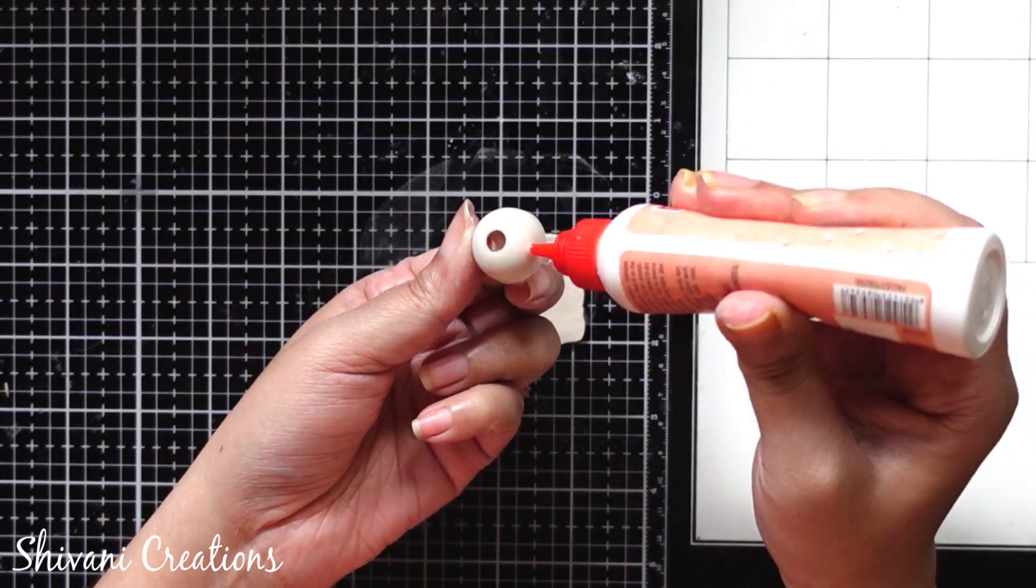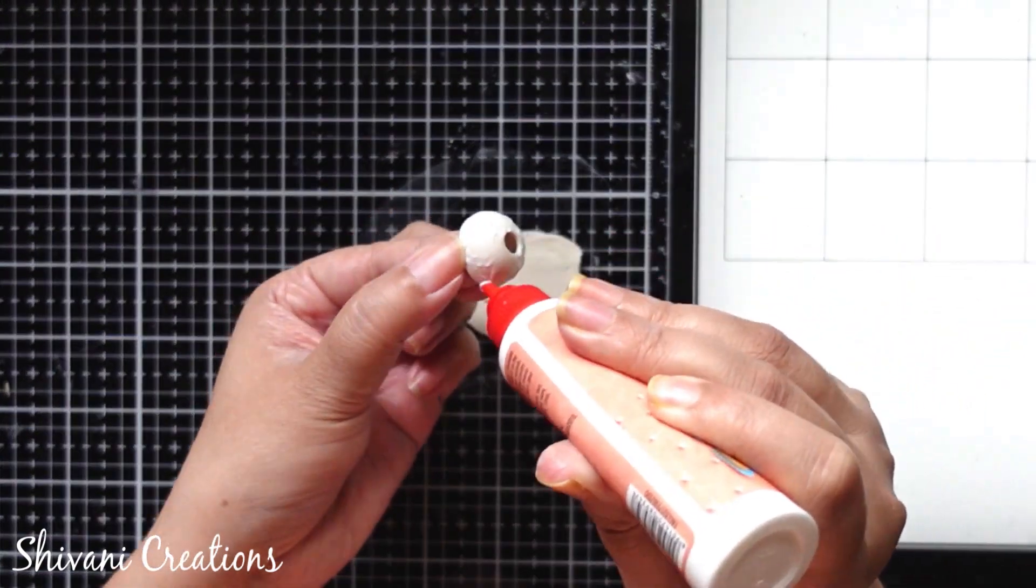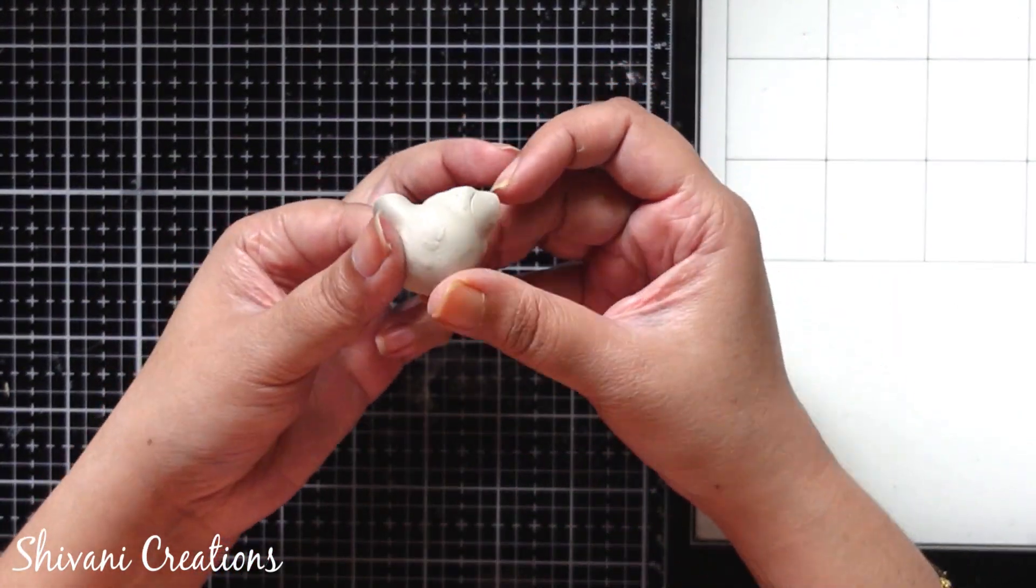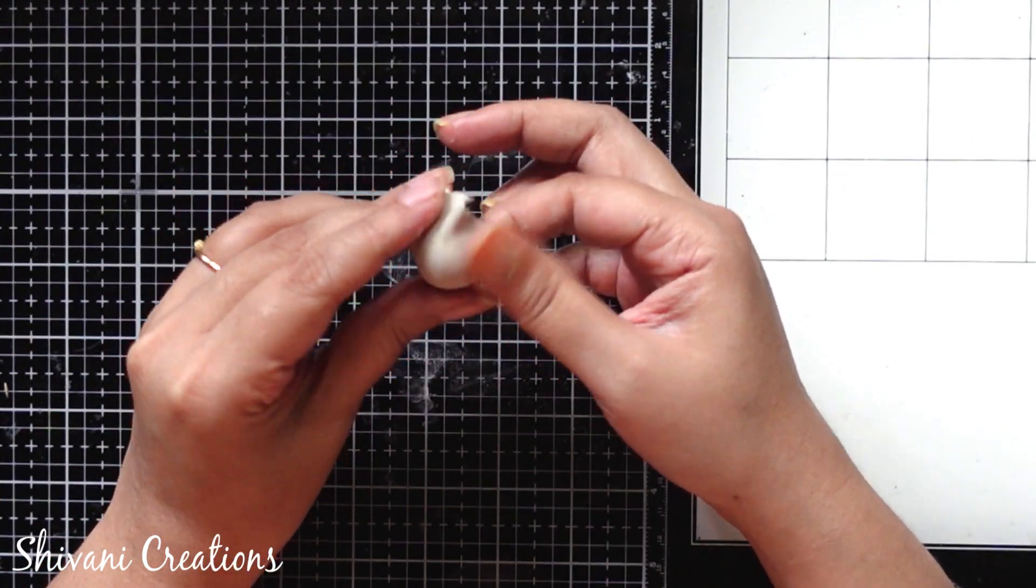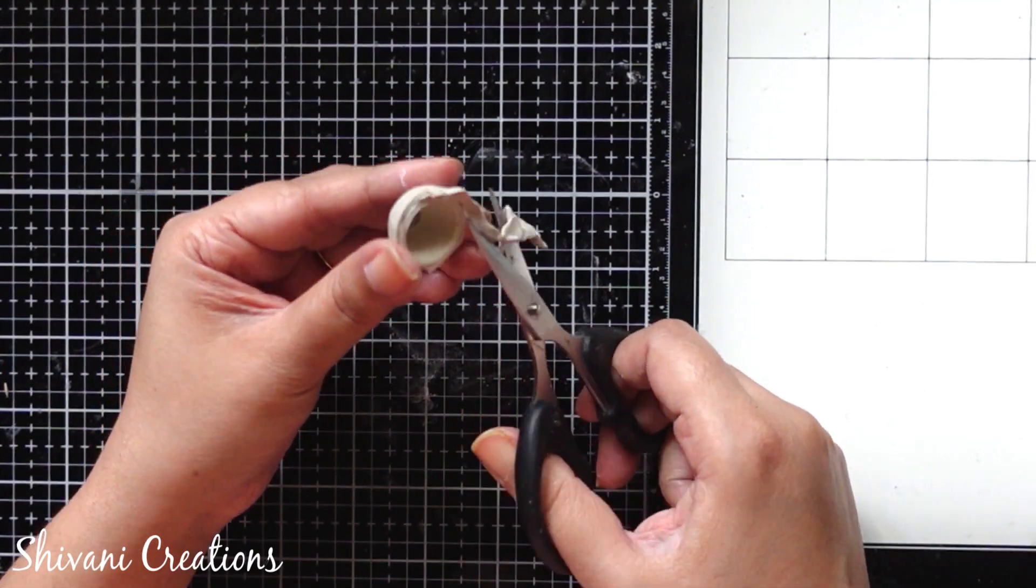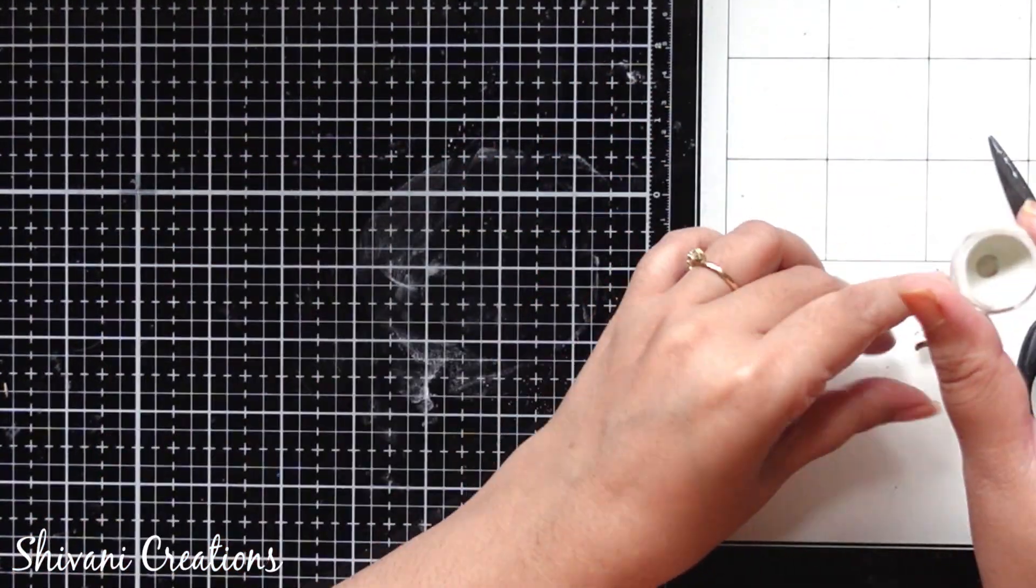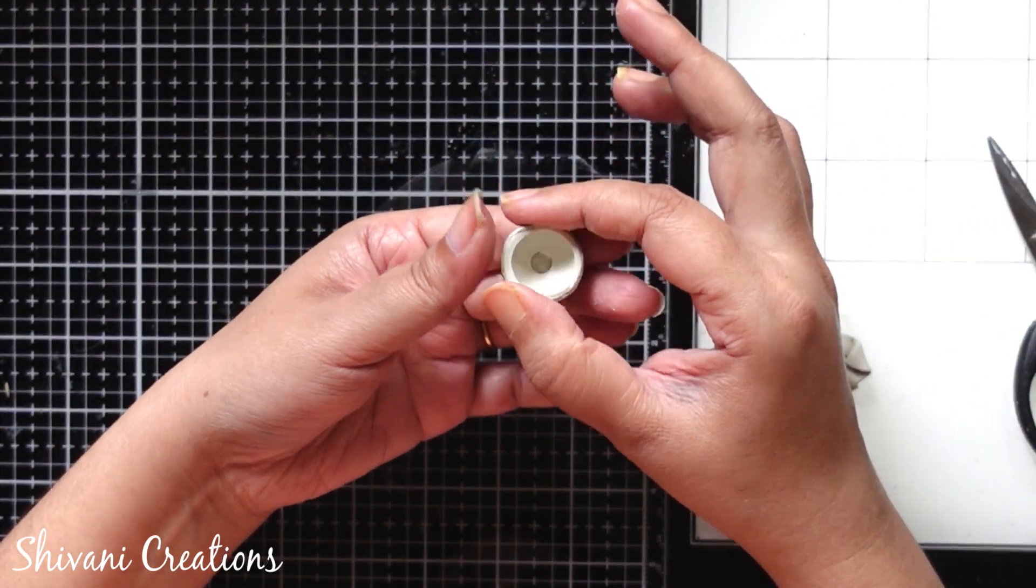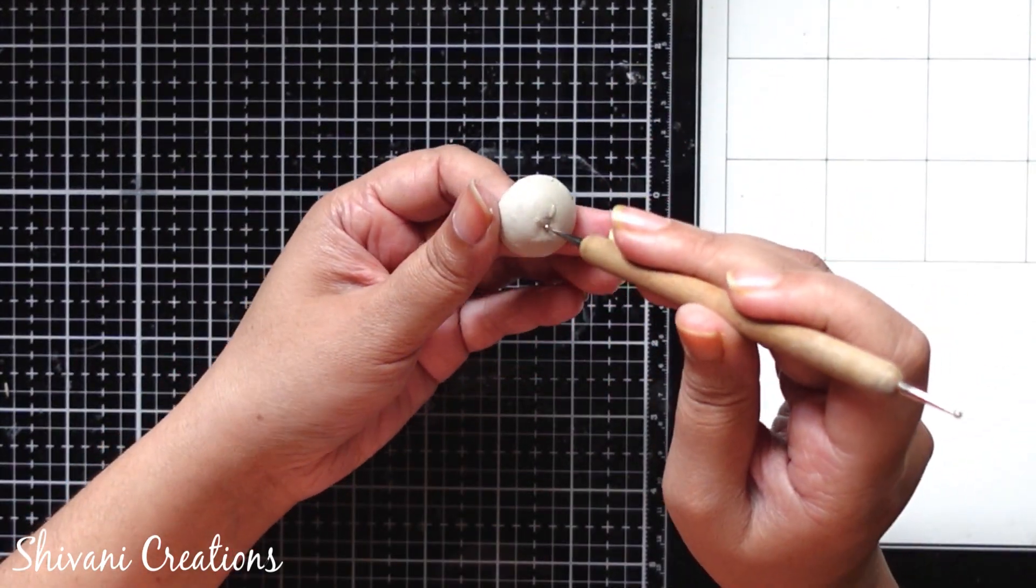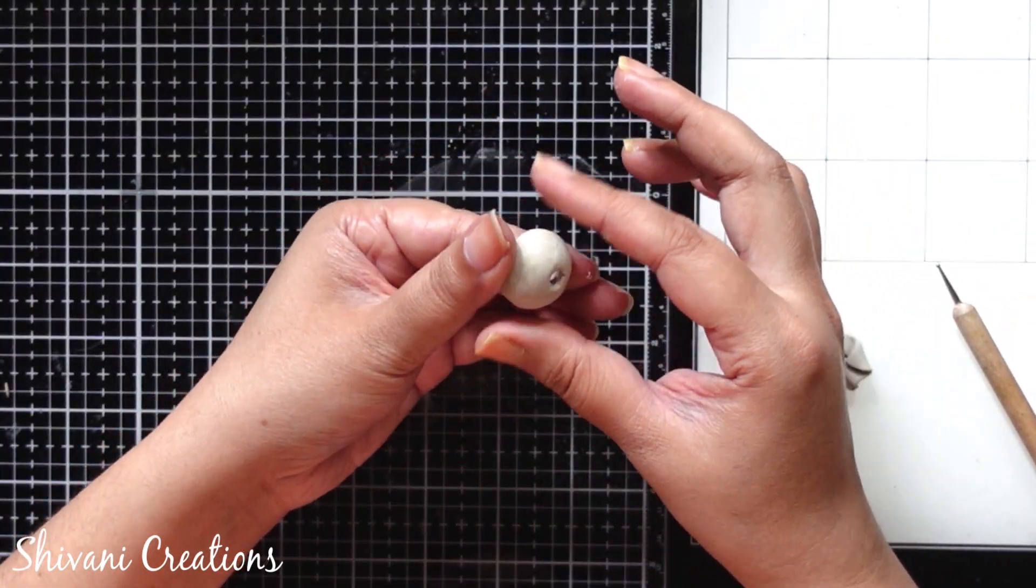And then apply a little glue on this dome and I am covering it completely using clay, cutting the excess clay from bottom. Also on the top, make a hole which is already there and this is done. Allow it to dry.